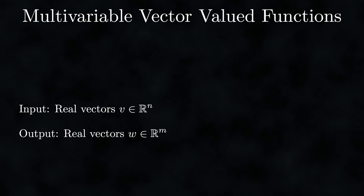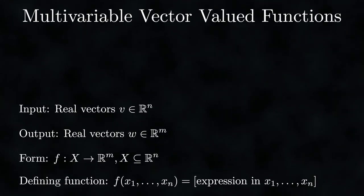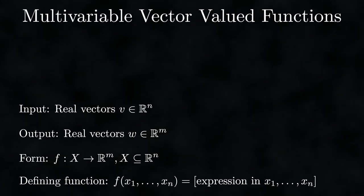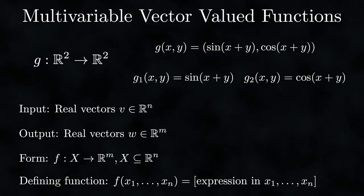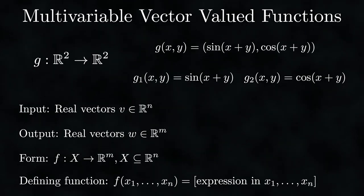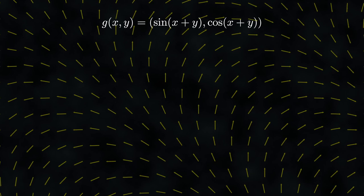Now let's merge multivariable and vector-valued functions to create multivariable vector-valued functions. These have the form f mapping a subset of real numbers to the nth power to real numbers to the nth power. For instance, g can map real numbers squared to real numbers squared, specified by a rule with multiple inputs and a vector output, visualized as a vector field. A question to consider: how would you use multivariable vector-valued functions to create a diffuse color map? An answer will be provided later in the video.